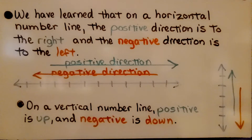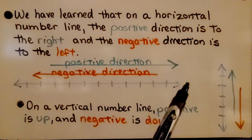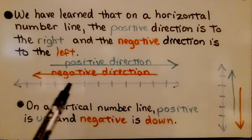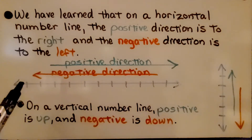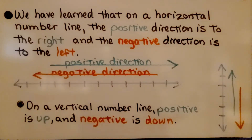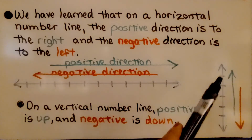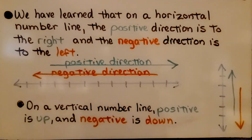We've learned that on a horizontal number line, the positive direction is to the right and the negative direction is to the left. On a vertical number line, the positive is up and the negative is down.